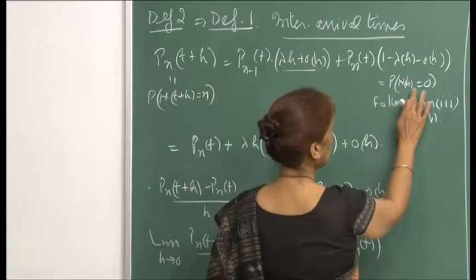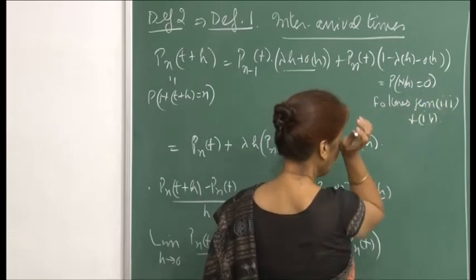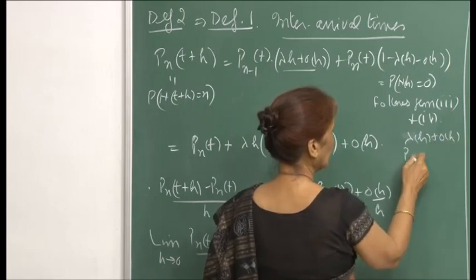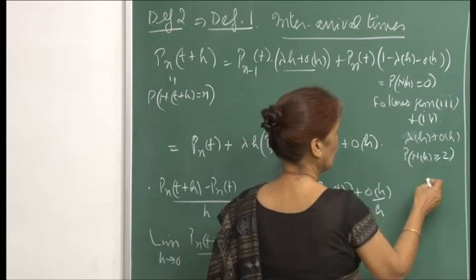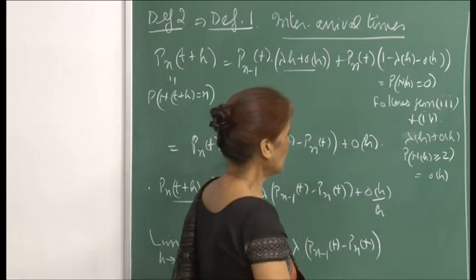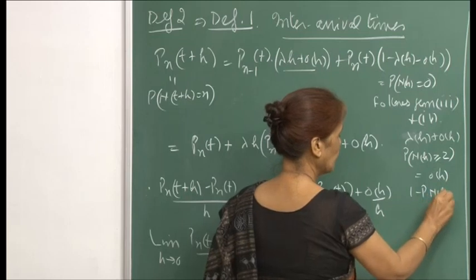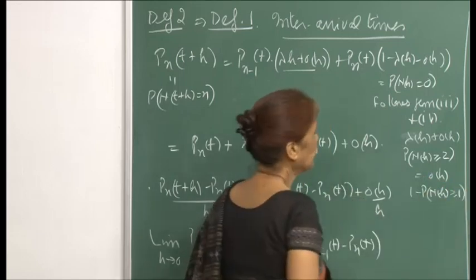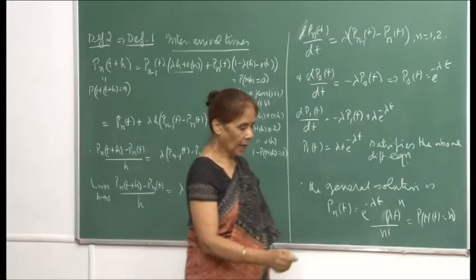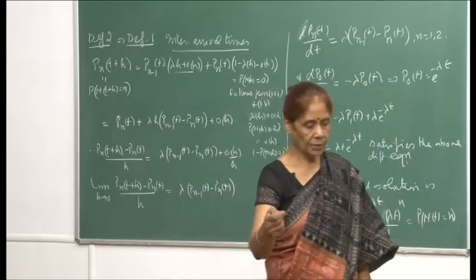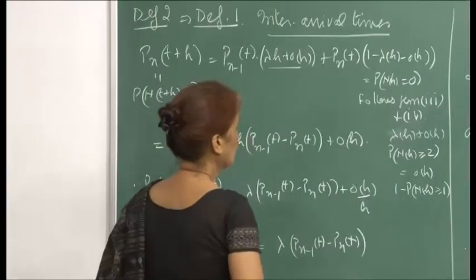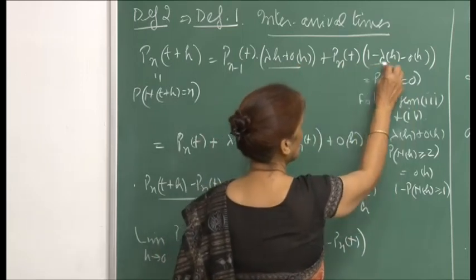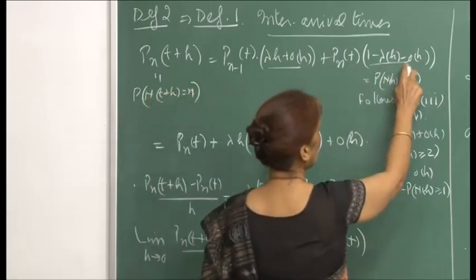From Definition 2, P(N(h) = 1) = λh + o(h). For P(N(h) = 0), since P(N(h) ≥ 1) = λh + o(h), we get P(N(h) = 0) = 1 − λh − o(h). Substituting these values, p_n(t+h) = p_{n−1}(t)·(λh + o(h)) + p_n(t)·(1 − λh − o(h)). Rearranging, [p_n(t+h) − p_n(t)] / h = λ·p_{n−1}(t) − λ·p_n(t) + o(h)/h.